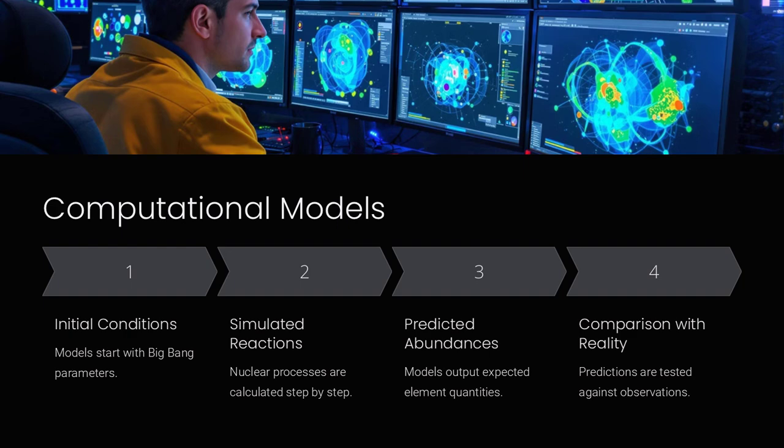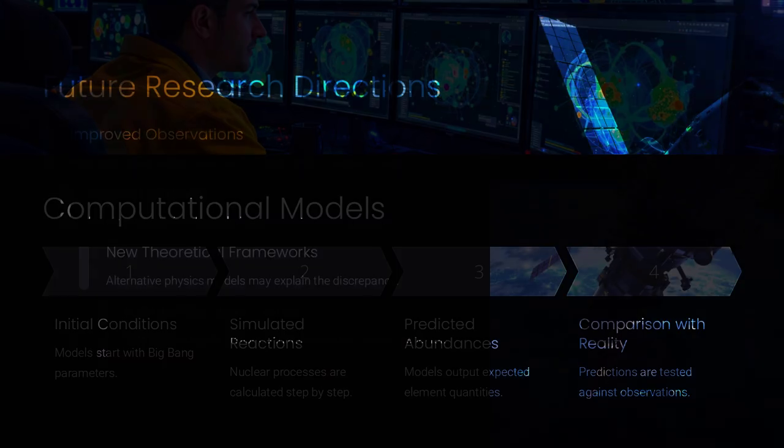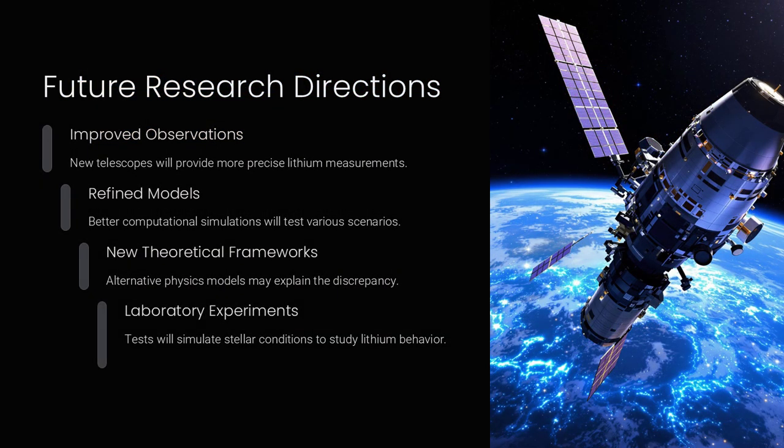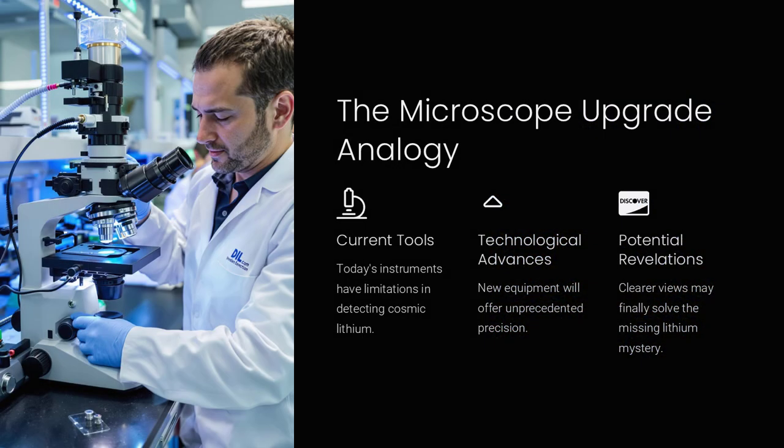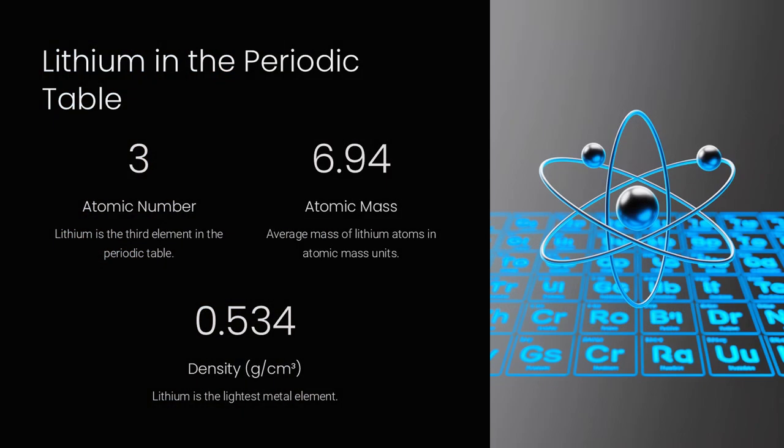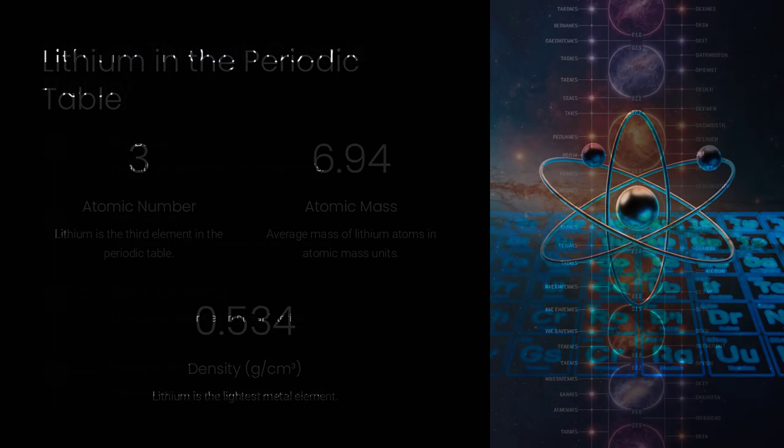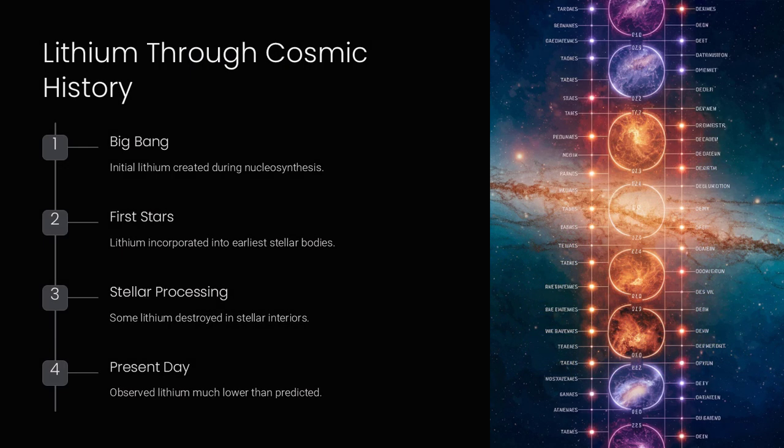One possibility is that our understanding of the nuclear reactions during the Big Bang might be incomplete. Some scientists suggest that the reaction rates used in our models could be off, leading to an overestimate of lithium production. However, extensive experiments and simulations have made this explanation less likely.